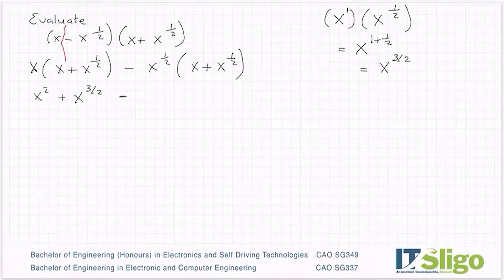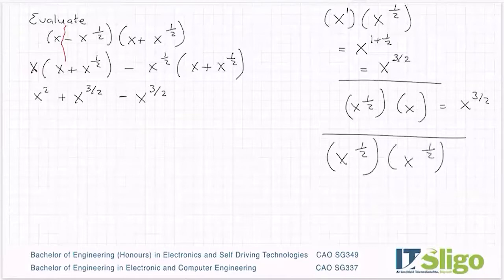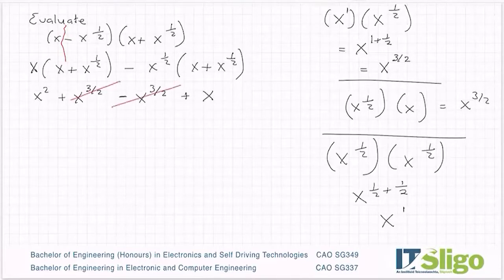And then we get minus. Well, we have x to the power of a half by x. So you can see it's actually the same as up here, the numbers are the opposite way. So it's again going to be x to the power of three over two. And then I have x to the power of a half by x to the power of a half. So again, the base numbers is the same, and when you multiply indices, you add the powers, and you get x to the power of a half and a half is one. So it's plus x. So what happens is they cancel in the middle, and your answer is x squared plus x.